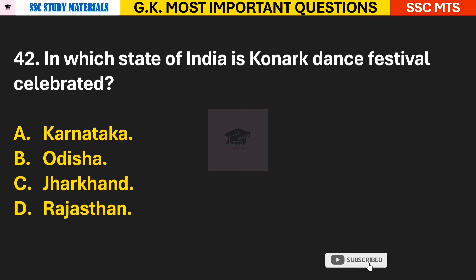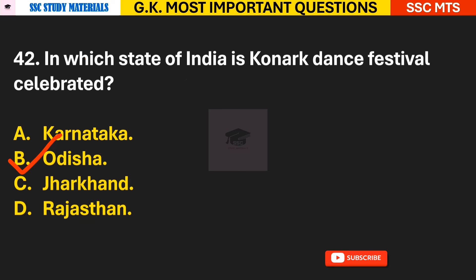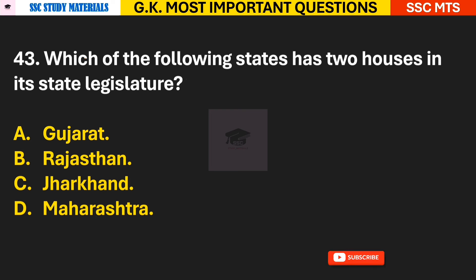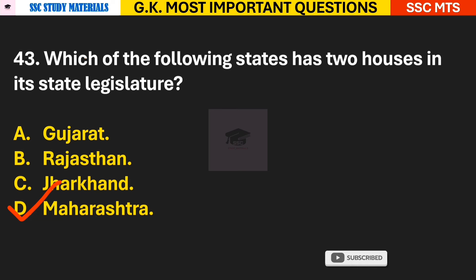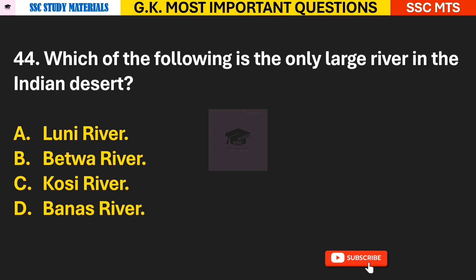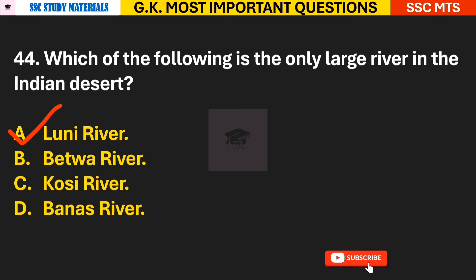Question 42: In which state of India is the Konark Dance Festival celebrated? Answer B — it is celebrated in Odisha, at Konark. Question 43: Which of the following states has two houses in its state legislature? Answer D — Maharashtra. Question 44: Which of the following is the only large river in the Indian desert? Answer A — the Luni River.